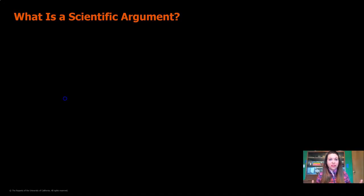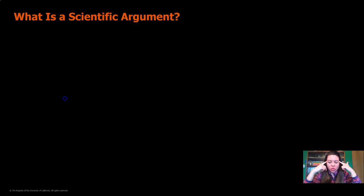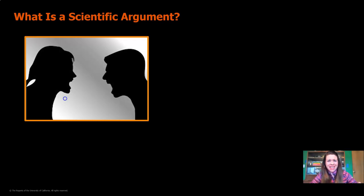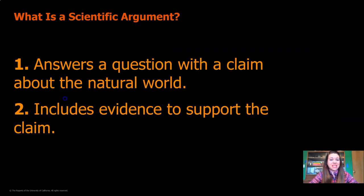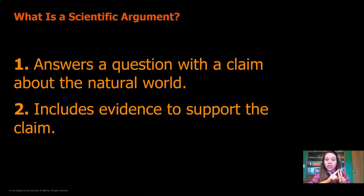Now we're going to work together to write our first scientific argument. What is a scientific argument anyway? When I visualize the word "argument," I think of two people yelling at each other and being really mad. But that's not what a scientific argument is. Scientists don't get angry and shout at each other about who's right and who's wrong. Instead, a scientific argument does two things: number one, it answers a question with a claim about the natural world; and number two, it includes evidence to support the claim.